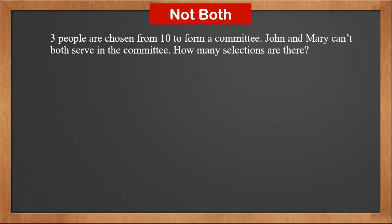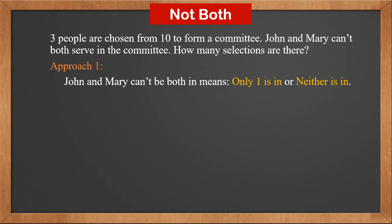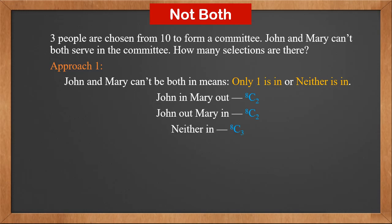Three people are chosen from 10 to form a committee. Two of those 10 are John and Mary, and they can't both serve on the committee. How many selections are there? Our first approach is to find all possibilities. John and Mary can't both be in, meaning only 1 is in, or neither is in. If John is in and Mary is out, 2 positions are left for the remaining 8 people — this is 8C2. If John is out and Mary is in, it is also 8C2. If neither is in, all 3 positions are filled by the remaining 8 people — this is 8C3. So the answer is 2 × 8C2 + 8C3, which is 112.